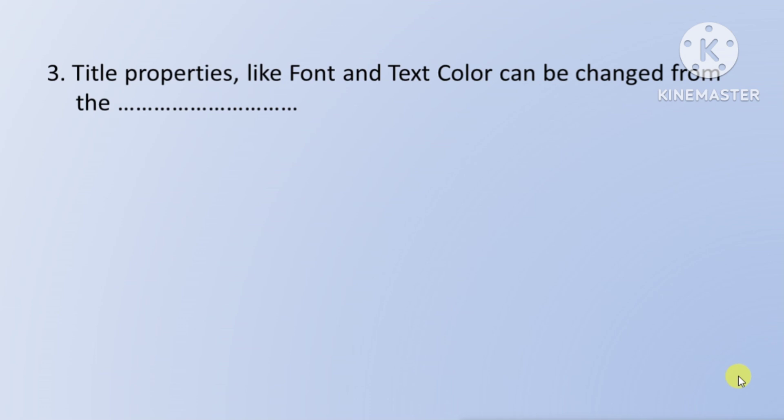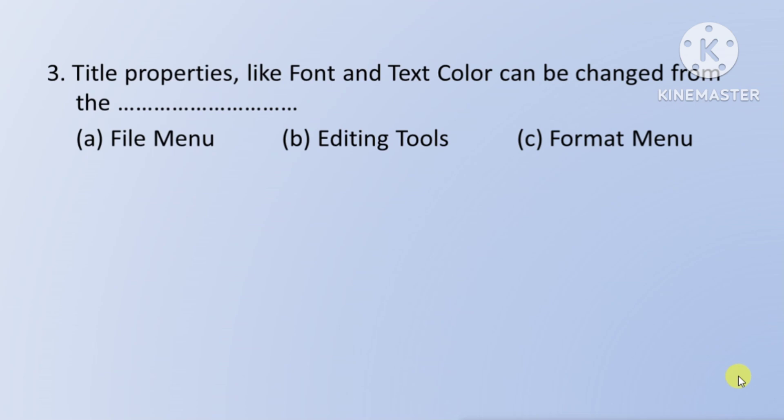Next question: title properties like font and text color can be changed from the — means title ki properties jaise font aur text color ko kahan se change kar sakte hain? Option A: File Menu. Option B: Editing Tools. Option C: Format Menu. The right answer is Option B: Editing Tools.